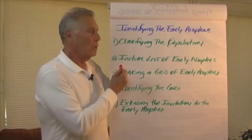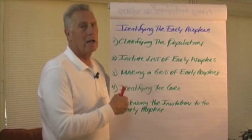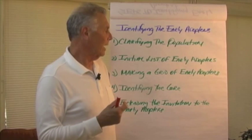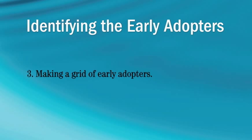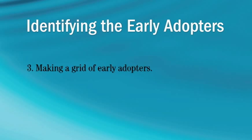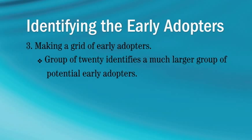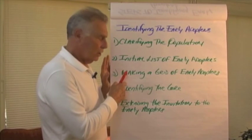That group goes out and identifies a much larger group of people. All 20 people go out and generate that larger list. That information is then collected and you make a large grid of all the literal people who have been identified. There will be lots of overlaps, and you're hoping for lots of overlaps. So you make that initial grid.